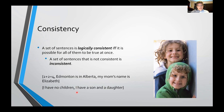I have no children. I have a son and a daughter. This is an inconsistent set — it is not possible for both of these sentences to be true.